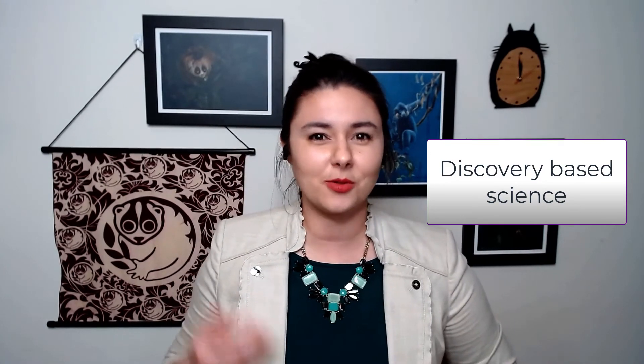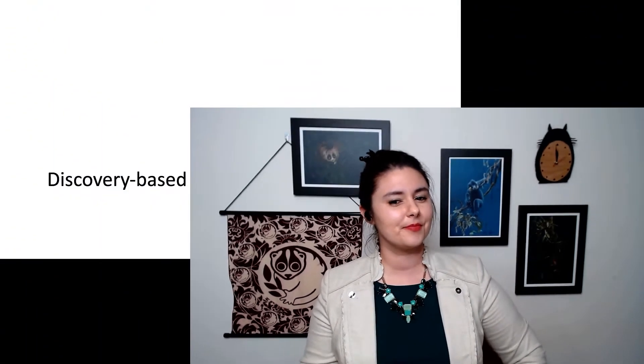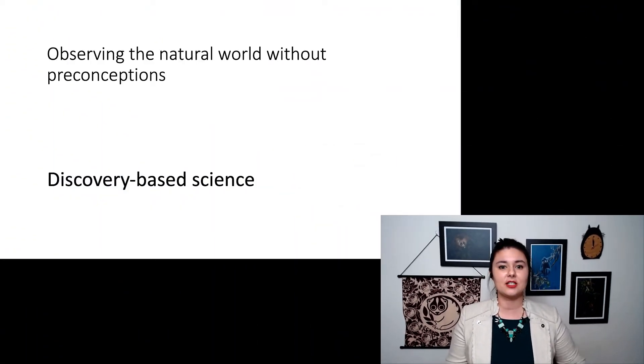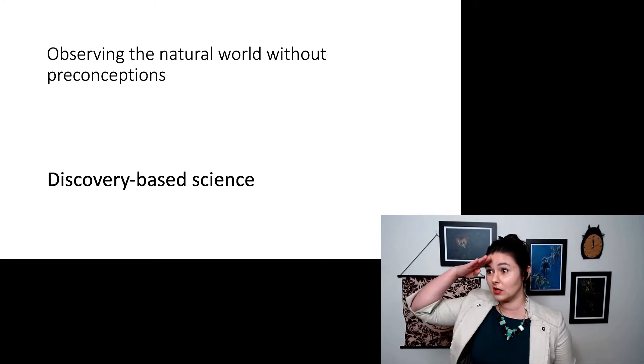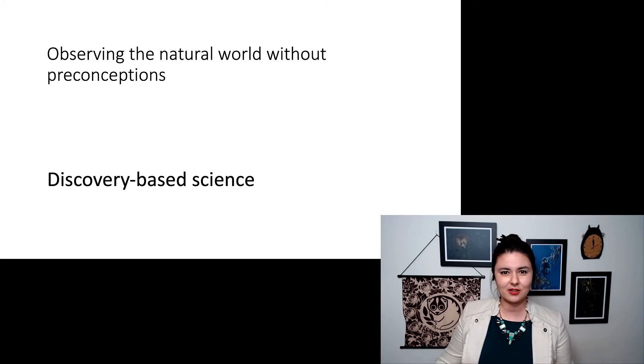Now we want to talk about different types of science. There's discovery-based science and then there's what you've probably already heard about in high school: hypothesis-based science. Let's start with discovery. Discovery-based science is where we are trying to observe the natural world without preconceptions. It's very self-explanatory - you look, you see a thing.